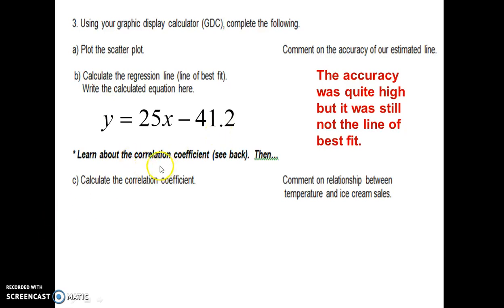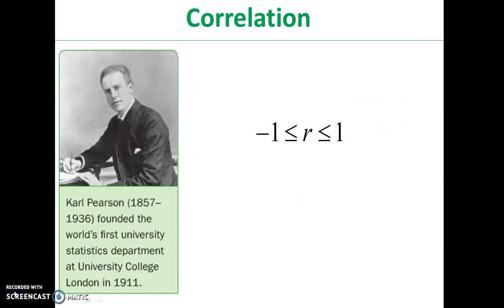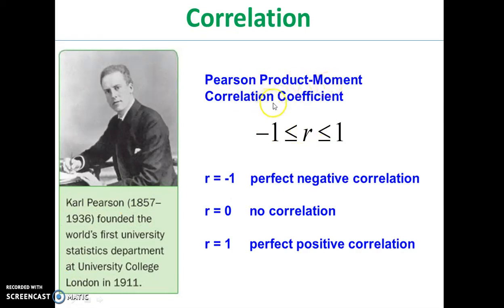So now we're going to learn about what the correlation coefficient is, which is on the back of this page. And then we're going to come back and calculate the correlation coefficient. Over the back side, there's a man named Carl Pearson who came up with the idea of a correlation coefficient. This is called the Pearson product moment correlation coefficient. It is always a value between negative 1 and 1. R equals negative 1 is perfect negative correlation. R equals 0 is no correlation. And R equals 1 is perfect positive correlation. Please pause and make sure you add these notes to your page.